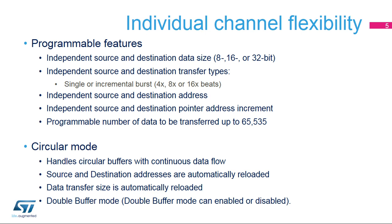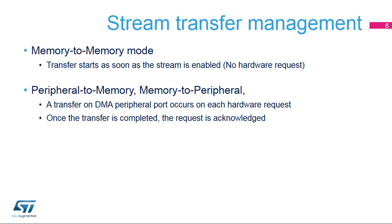Double buffer mode allows the switching between two memory buffers to be managed by hardware. Memory to memory mode allows transfers from one address location to another without a hardware request. Once the stream is configured and enabled, the transfer starts immediately.